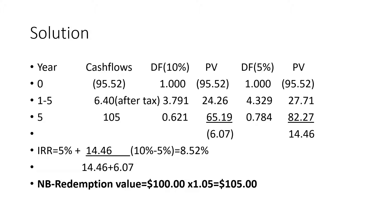We are going to draw a table with columns: year, cash flow, discount factor at 10%, and present value (PV). Year zero: cash outflow of 95.52, discount factor 1.000, therefore PV is negative 95.52.